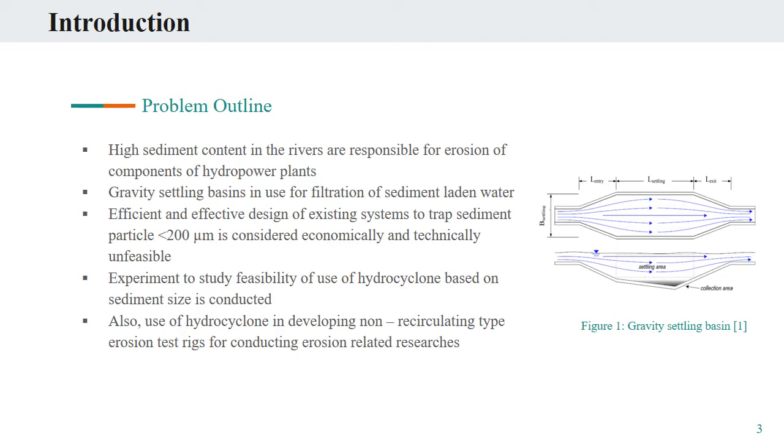This existing system can be obligated to enhance its trapping efficiency in expense of high cost and other technical reasons. But various limiting factors like topographical conditions, cost of shutdown or generation loss during flushing, repair and maintenance costs, and initial cost need to be taken into consideration. Taking this into account, the paper has attempted to investigate the feasibility to use hydrocyclone based on its efficiency to separate different sized particles. Also, the study takes into consideration the use of hydrocyclone in developing non-recirculating type of erosion test rigs to conduct erosion-related research.